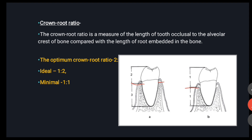The red line marks the alveolar crest of the bone. Don't think of the top of the gingiva — we are talking about the bone, the periodontal bone, the alveolar crest of the periodontal bone. The length of root considered is what is embedded inside the bone, not what is embedded inside the gingiva or not visible. So this is your crown length, and this is your root length.